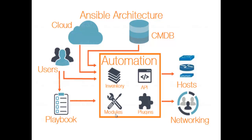There are a few more components in Ansible architecture. Networking: Ansible can also be used to automate different networks using the same simple, powerful, and agentless automation framework IT operations and development are already using. It uses a data model — a playbook or role — that is separate from the Ansible automation engine and easily spans different network hardware.